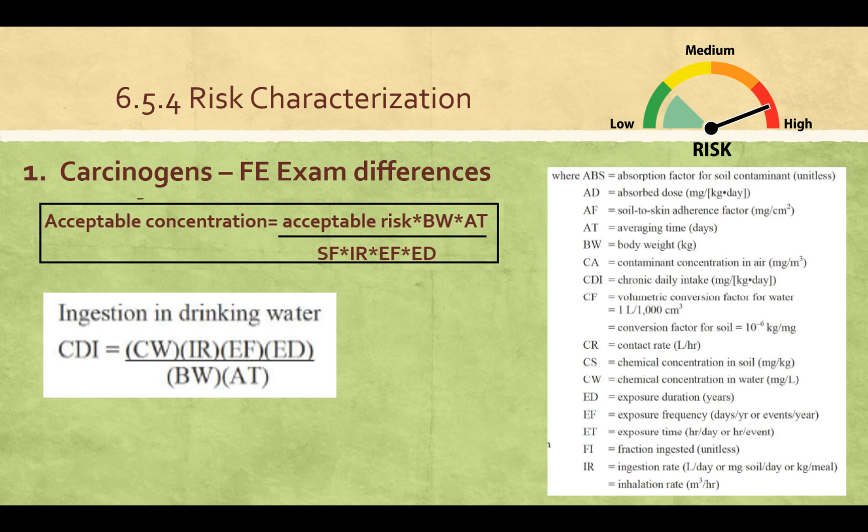A note here: the FE manual has slightly different variables. Most of them are the same and the equation is set up a little bit differently, so be familiar with both equations. The FE manual uses CDI, which is chronic daily intake in milligrams per kilogram per day, and CW is the chemical concentration in water. They calculate for the slope factor instead of the acceptable concentration, and the equations are broken down by whether the chemical is ingested via drinking water, soil, or air.